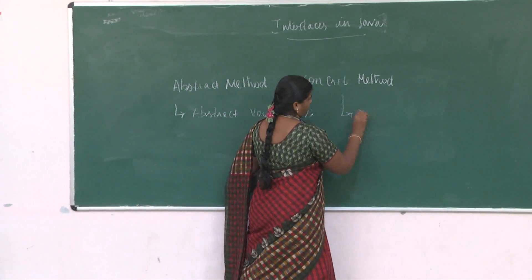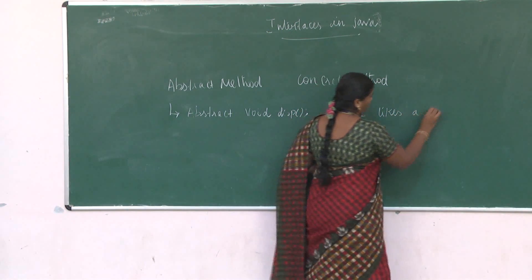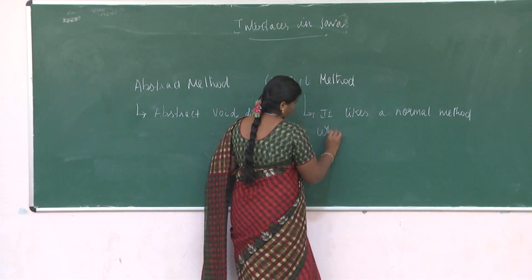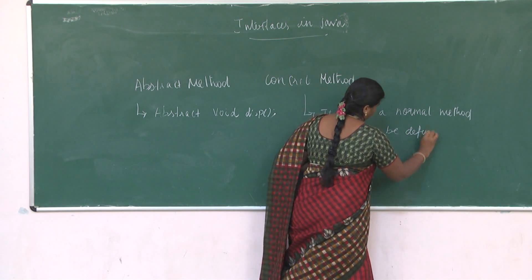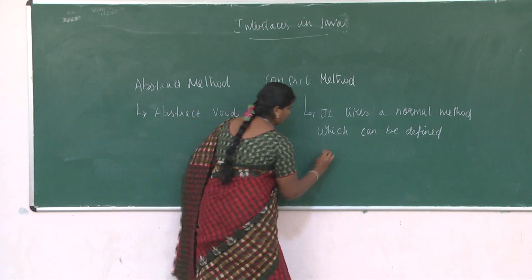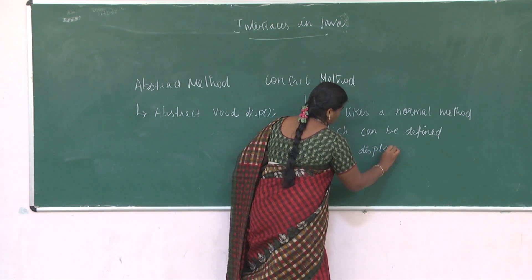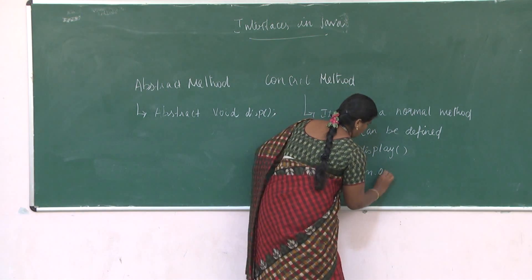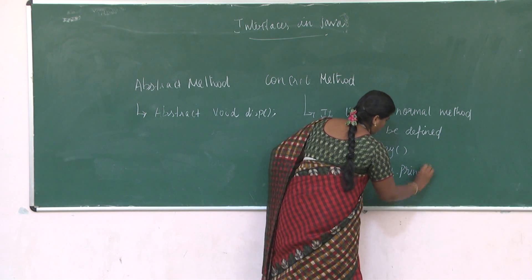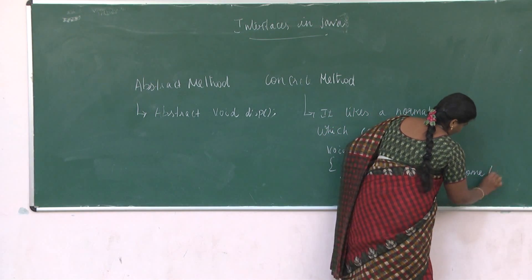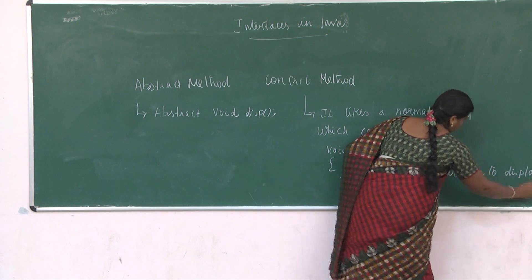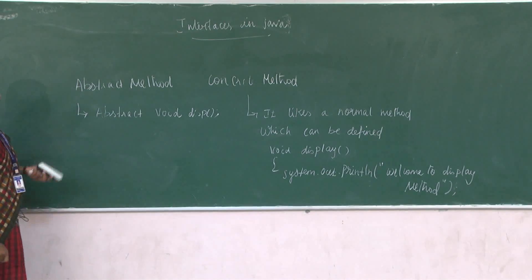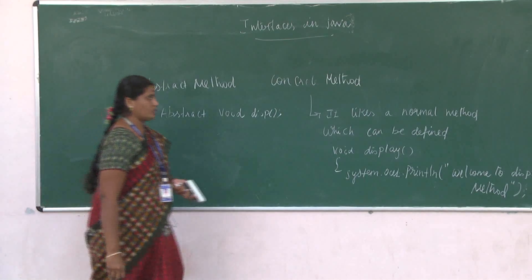A concrete method is like a normal method which can be defined. An example for a concrete method is void display. This method can be defined, and by using this method we are going to display some message, such as welcome to display method. Once we know about abstract method and concrete method, we can know the difference between fully abstraction and partial abstraction.